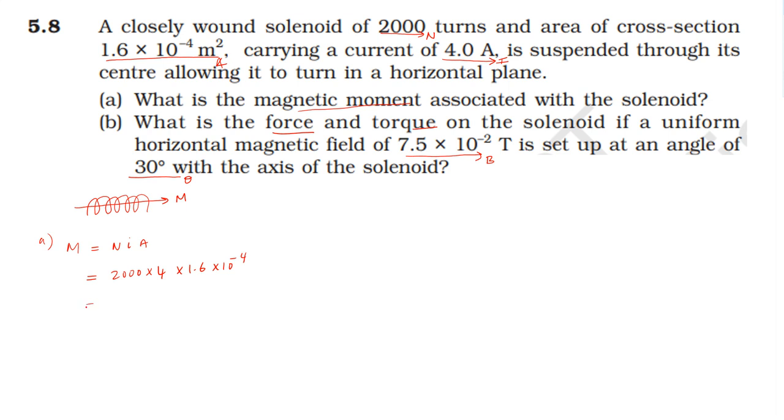If you multiply, you get the answer: one point two eight. The unit of magnetic moment is ampere meter square. The magnetic moment is along the axis of the solenoid. The direction can be found using the right-hand rule.